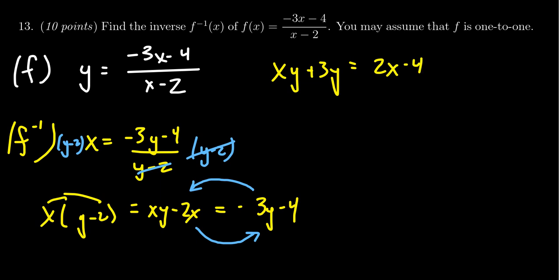Now you'll notice because of how we organize things, there is a multiple of y on the left-hand side. In fact, everything's a multiple of y. We have xy and we have 3y. We can factor the y out, giving us y times x plus 3, and this is equal to 2x minus 4.